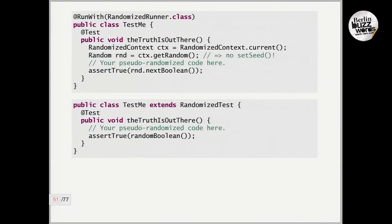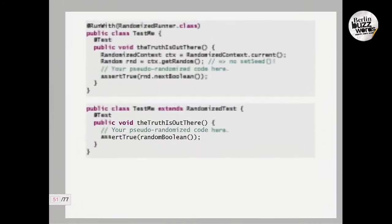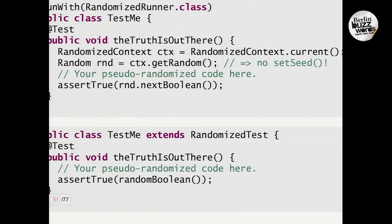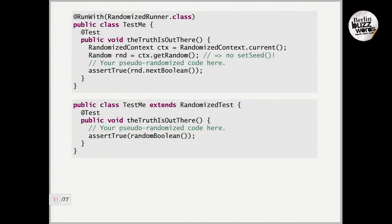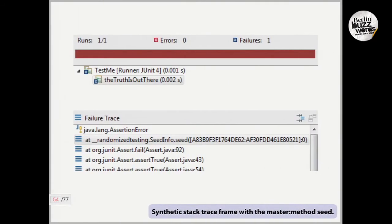You would probably want to utilize this randomness somehow. It can be done in a number of ways with utility methods so you don't have to know anything about the internals, or you can explicitly call for the randomized context, which provides you with random number generators. You get a random and then you just use it — pick whatever values or inputs you want for your program and run your program with those values. Here we have an example that asserts true on a random variable — this test should fail on every other run.